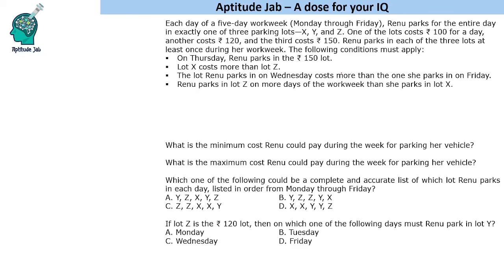Now certain conditions are given to us. On Thursday, she parks in the Rs. 150 lot. Lot X costs more than lot Z, so we can have X as 150 and Z as 120, or X as 150 and Z as 100, or X as 120 and Z as 100. The lot Renu parks in on Wednesday costs more than the one she parks in on Friday. She parks in lot Z on more days of the work week than she parks in lot X.